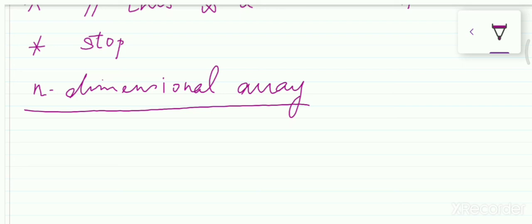An n-dimensional array - how to declare an array of that kind? Let us consider the array name as A. Array name is A.